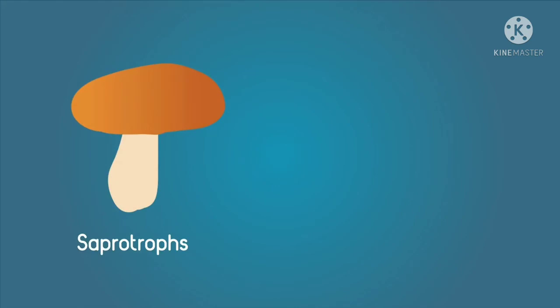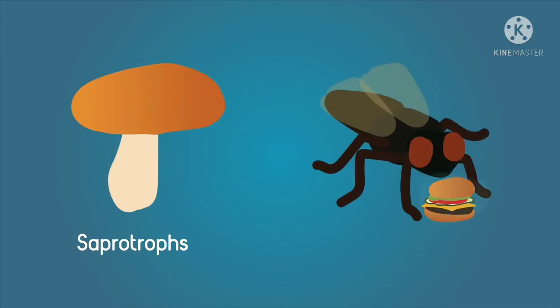This means that they secrete enzymes out of their cells onto food around them, and then absorb the nutrients once they have been broken down. House flies do a similar process where they secrete a solvent onto the food and then suck up the nutrients. Mmm, lovely.